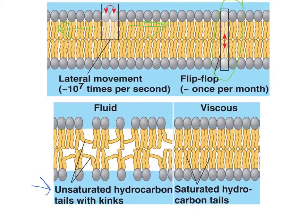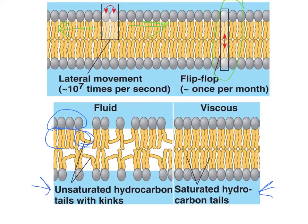In membranes that contain more unsaturated phospholipids — remember, the phospholipid has the phosphate head and the fatty acid tail, and unsaturated fats have some double bonds in them — those double bonds cause the tails to kink or bend at that double bond, allowing for more spacing between the phospholipids. So these membranes are more fluid when they have more unsaturated hydrocarbons.